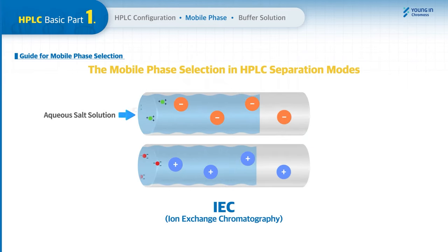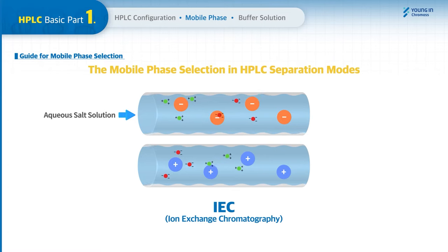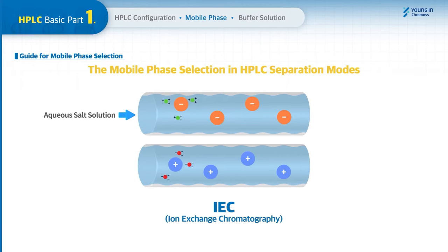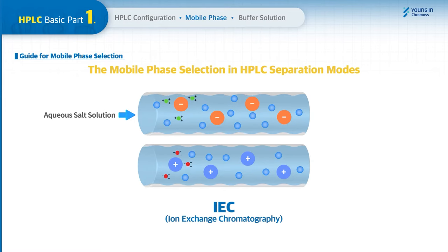In ion exchange chromatography, separation depends on ionic interactions between ionic and polar molecules, and an aqueous salt solution is commonly used as the mobile phase. It is generally recommended to use a buffer solution to adjust the strength and selectivity of the solvent by managing pH and salt concentration.